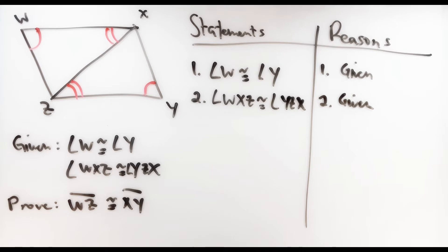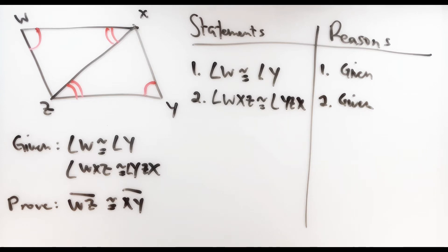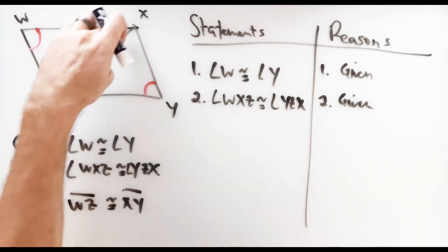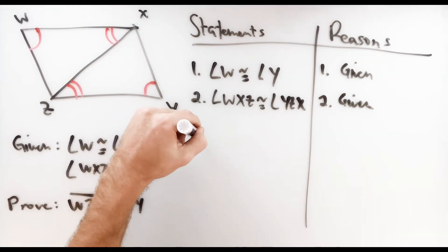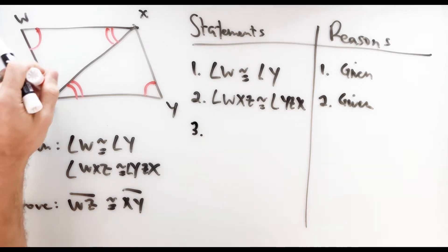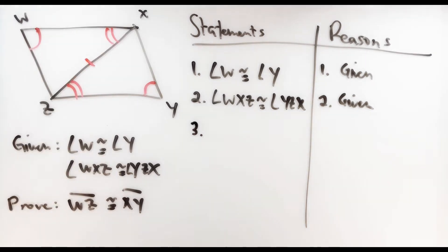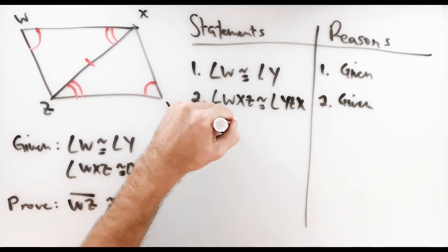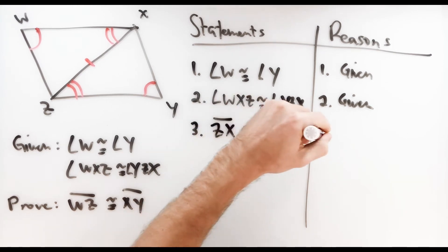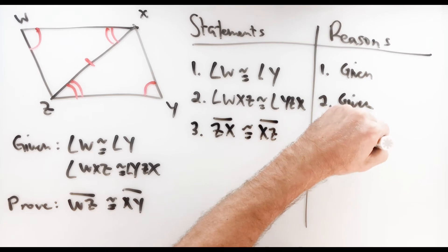We've already got two pairs of angles congruent, which means we only need one more thing. These two triangles share a side — they line up back to back on this middle segment ZX. You're familiar with the reflexive property that says any segment is congruent to itself. So that middle segment, ZX is congruent to itself by the reflexive property. Now we do have enough information to say that these two triangles are congruent.